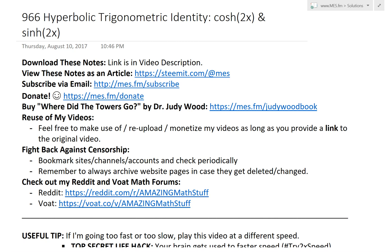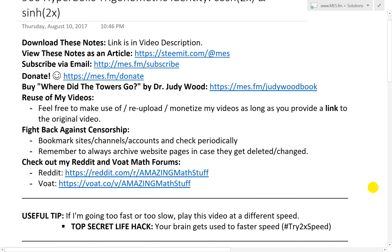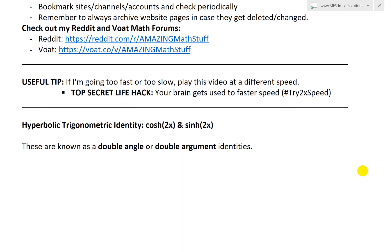Hi, it's time for another Math Easy Solution term discussed further into hyperbolic trigonometric identities. And now look at cosh 2x and sinh 2x, or a hyperbolic cosine and hyperbolic sine of 2x. So let's jump right in.